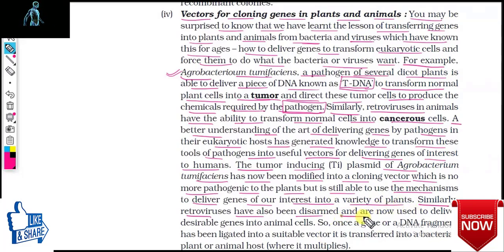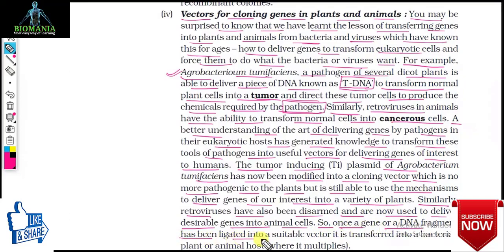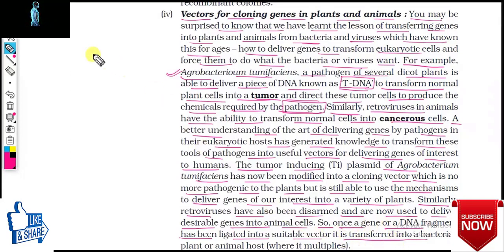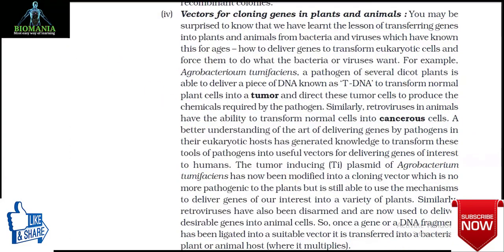Similarly, retroviruses in animals have the ability to transform normal cells into cancerous cells. Better understanding of how pathogens deliver genes in their eukaryotic hosts has generated knowledge to transform these tools of pathogens into useful vectors for delivering genes of interest to humans.